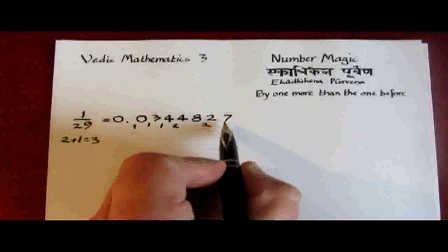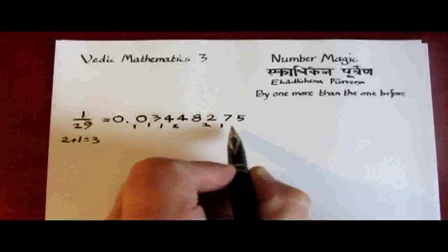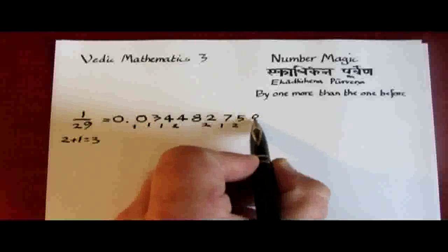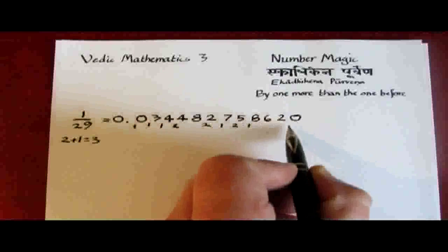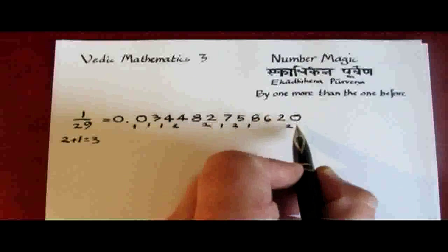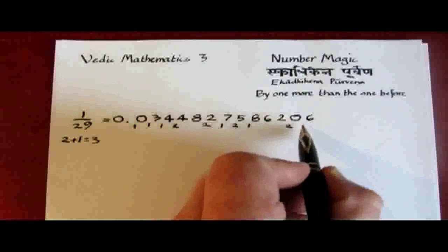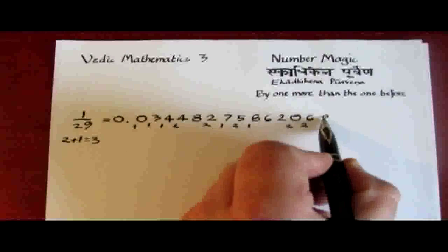Then 7, remainder 1, 5, remainder 2, 8, remainder 1, 6, 2, 0, remainder 2. 3 into 20 goes 6 times with 2 left over, and then 8, remainder 2.